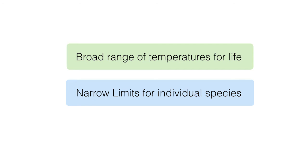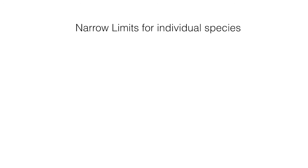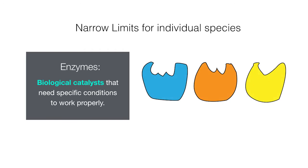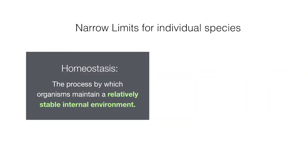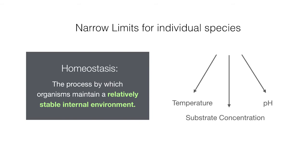We'll skip the first section for now and focus on the narrow limits for individual species first. The reason why there is a narrow limit for individual species to exist is because of our enzymes. Enzymes are important biochemical catalysts that need specific conditions to work properly. The way to ensure these specific conditions is through homeostasis — the process by which organisms maintain a relatively stable internal environment. Things like temperature, substrate concentration, and pH must be kept constant and maintained, or things will be like that cat in the Arctic. Not good.